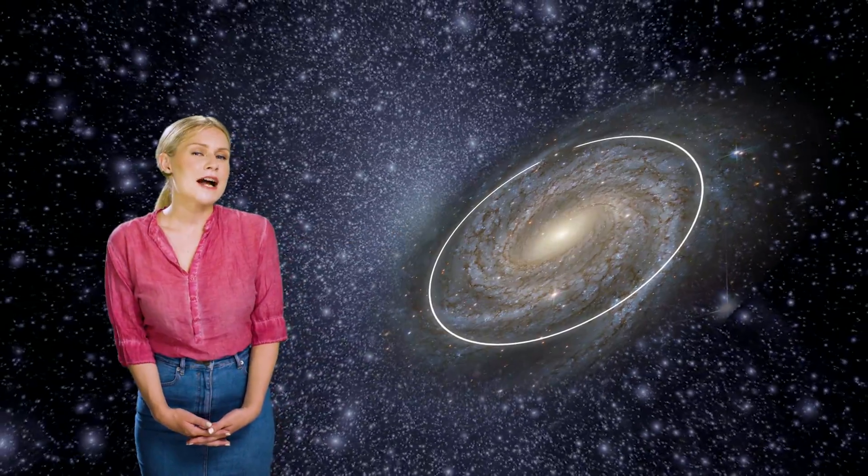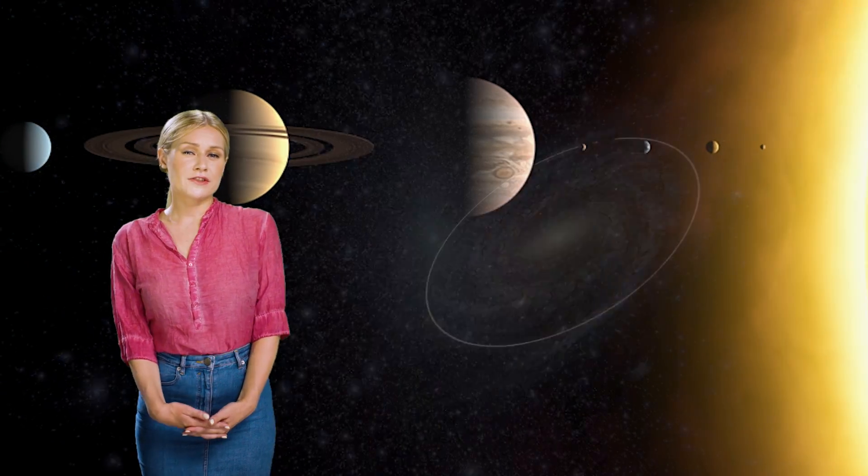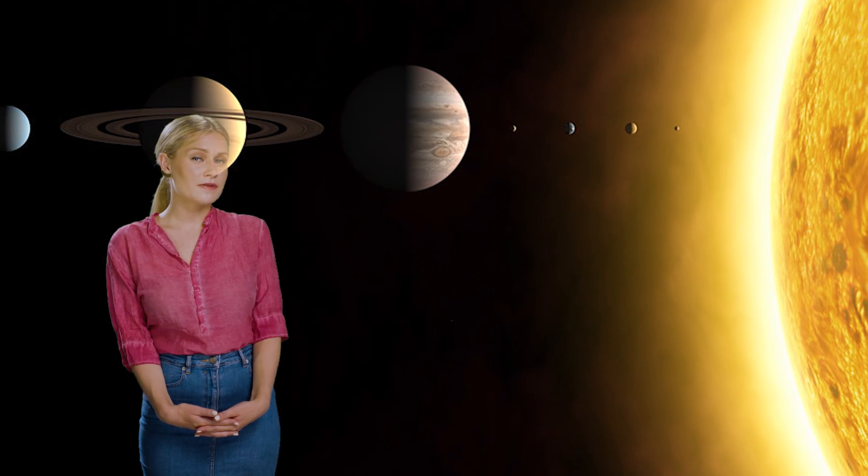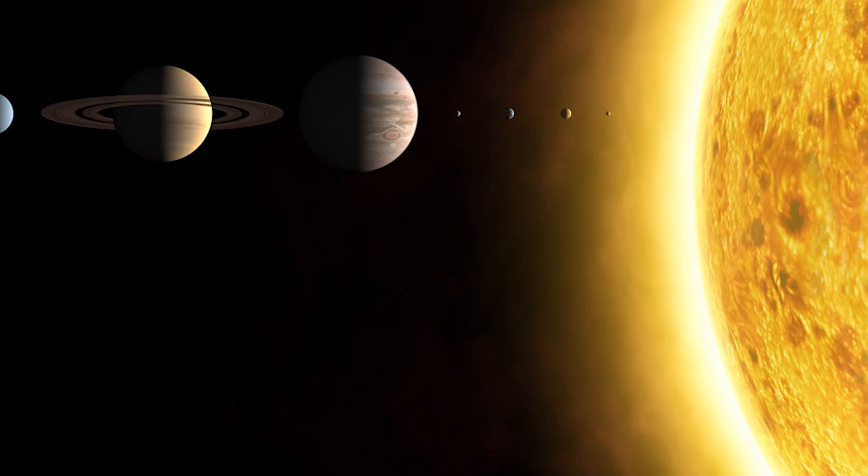Similarly, we can estimate how fast stars should be moving around a galaxy. In the solar system, the planet's rotational velocities are entirely determined by the Sun, since the Sun is a lot more massive than any of the planets in the solar system.